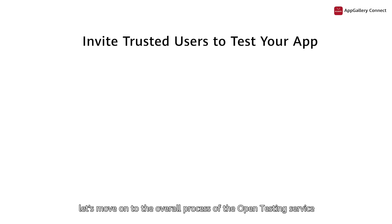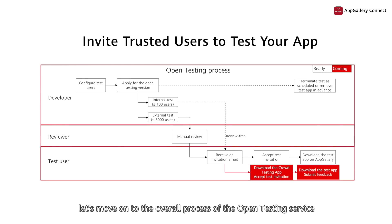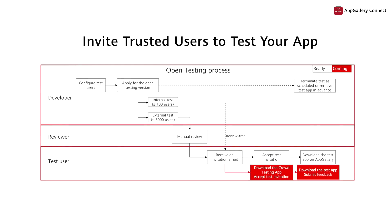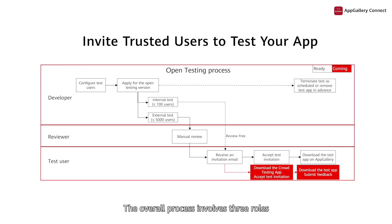Next, let's move on to the overall process of the open testing service. Capabilities with a white background are ready, and those with a red background are being planned. The overall process involves three roles: developer, reviewer, and test user.